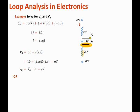Another way to solve for VB is to use Ohm's law to find the voltage across the 6k ohm resistor. At the bottom of the resistor, the voltage equals negative 10. So VB, which is the voltage at the top of the resistor, equals the voltage drop across the resistor — that is 6k times I — plus the voltage at the bottom, which is negative 10. Since I equals 2 milliamps, VB equals 2 volts.